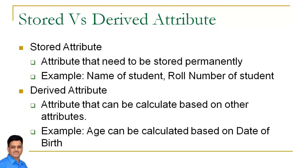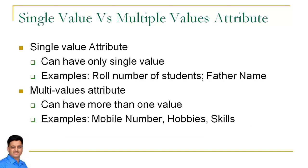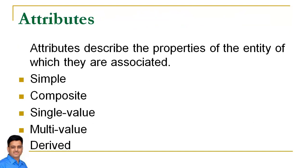Toh wo attribute jis ki value kisi doosre column se derive ki ja sakti hai, un attributes ko hum derived attribute bolte hai. Ultimately, humare paas total 5 major types of attributes hain. One is simple — jisko further break nahin kar sakte, like roll number. Composite — jisko split kar sakte hain, like name and address.